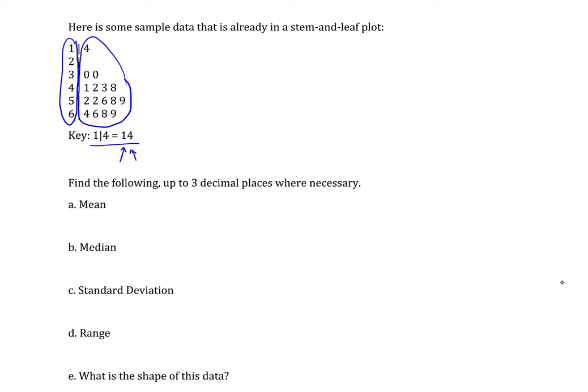So one with a bar of four means I have a data item of 14. And then I have three bar zero, so that means I have a 30 in my data set, and then another 30, and then 41, 42, and so forth. So that's all my data.